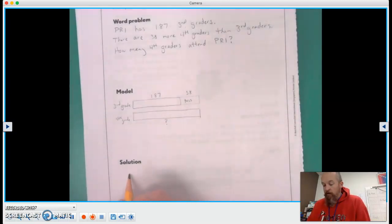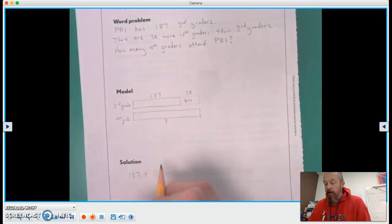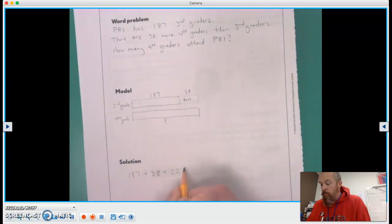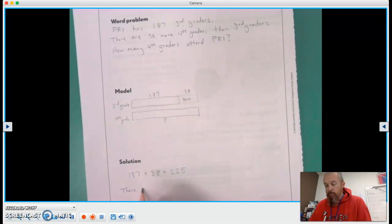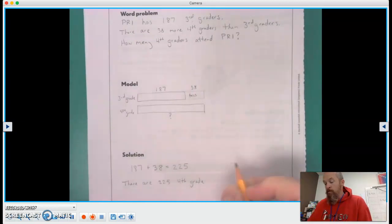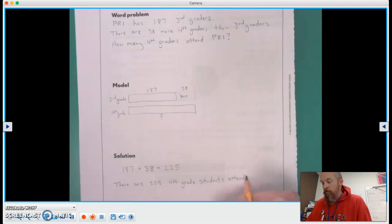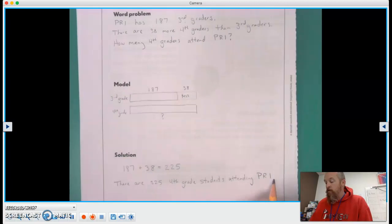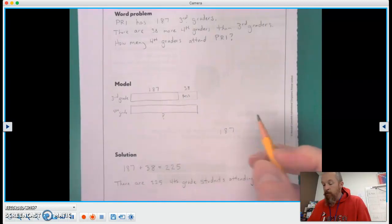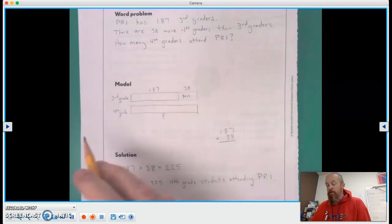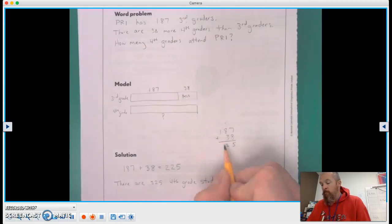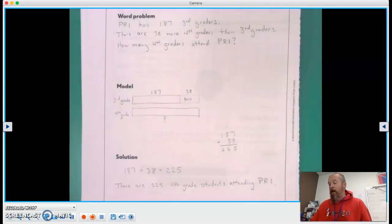We have 187. We need to add 38, and that equals 225. There are 225 fourth grade students attending. You can go ahead and show your work off to the side, like we've been doing. I'm going to add those 38. Now I know we kind of already had that work done, but you'll want to make sure the work is done correctly. So there we are.